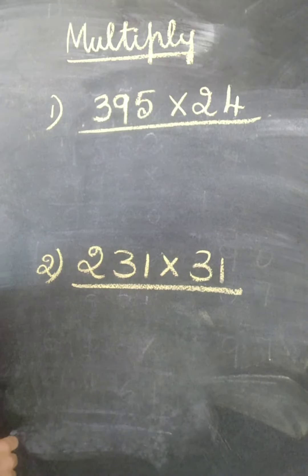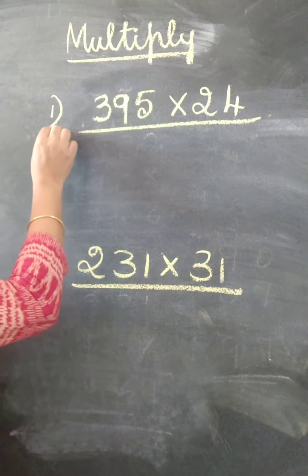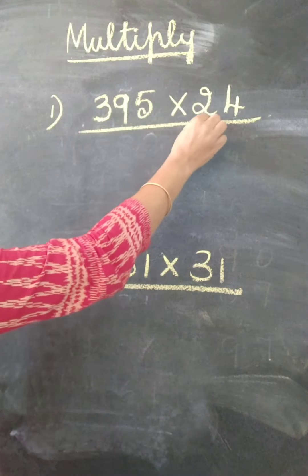Good day students. Today let us learn how to multiply numbers. First sum is 395 multiply by 24.